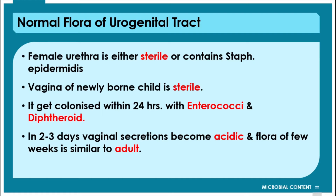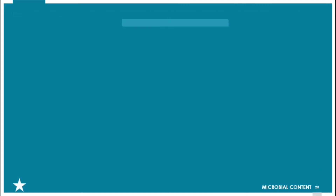The Lactobacillus ultimately ferments the glycogen to produce acid, which is why vaginal secretions become acidic within two to three days. The flora of a few weeks of age becomes similar to that of the adult.